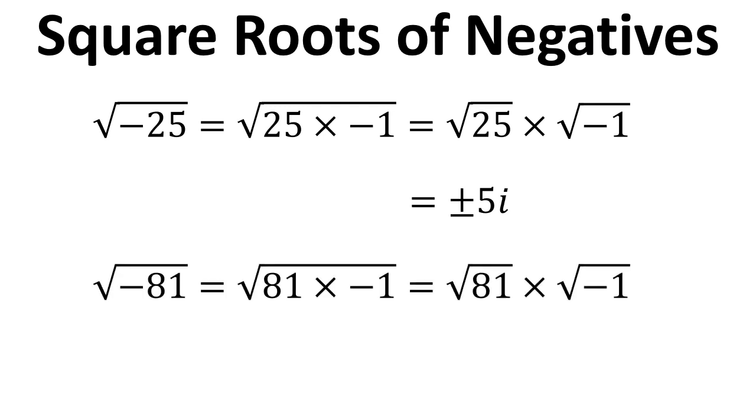Another example, same process. This time square root of minus eighty-one: we separate things out. Square root of eighty-one is plus or minus nine and then we include the i for the square root of negative one.